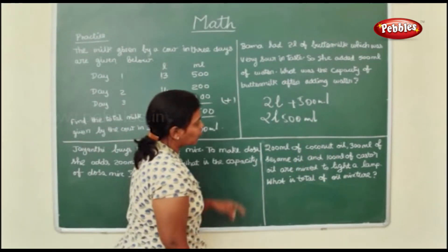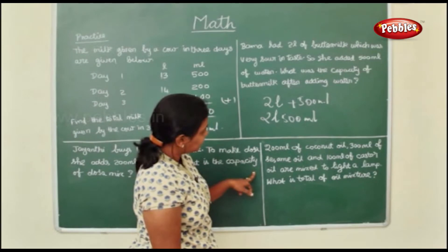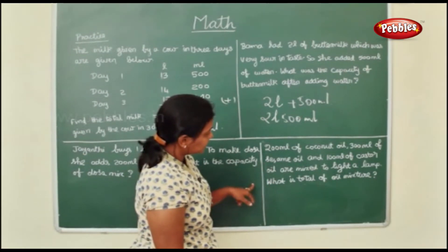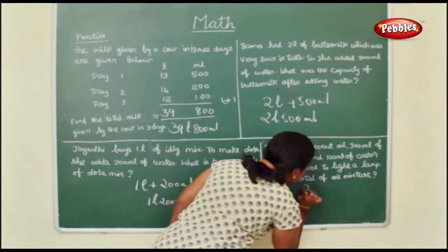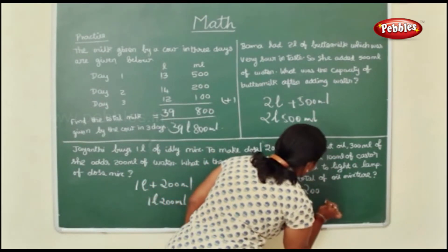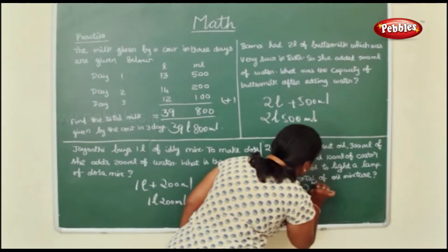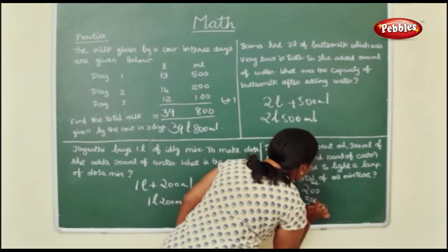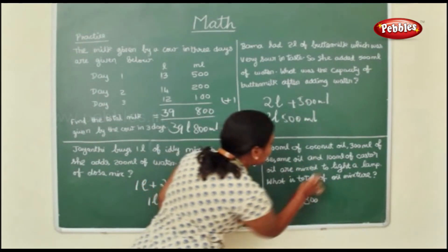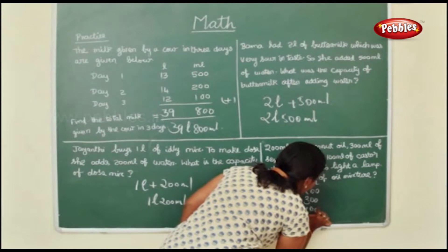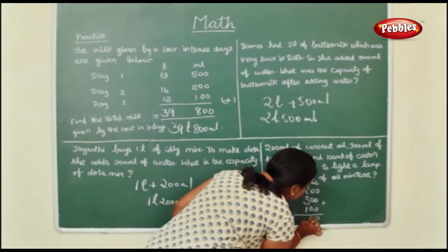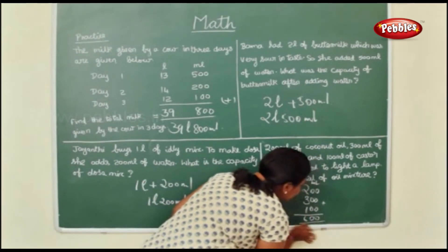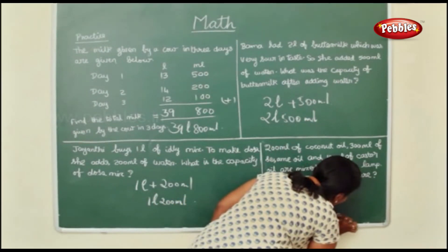200 ml of coconut oil, 300 ml of sesame oil and 100 ml of castor oil are mixed to light a lamp. What is the total of the oil mixture? So 200 ml of coconut oil. Sesame oil is 300 ml. Castor oil is 100 ml. So I am adding these together. 2 plus 3 is 5, 5 plus 1 is 6. So 600 ml together.